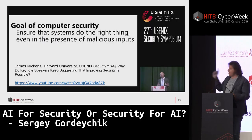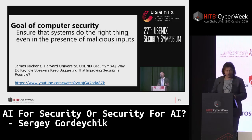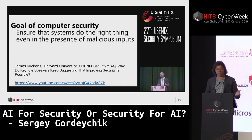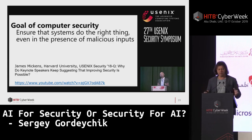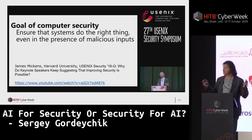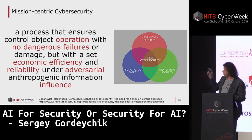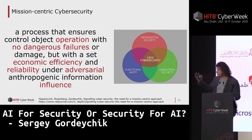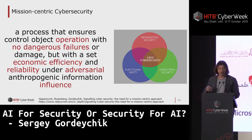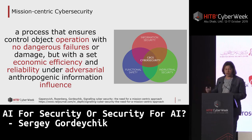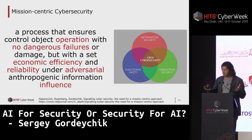I really like this definition of cybersecurity from James McKinsey, who gave a perfect keynote address at the USENIX Security Symposium. His definition is: what is the goal of cybersecurity? It is ensuring that systems do the right things, even in the presence of malicious inputs. I like it because in one of my research projects for industrial cybersecurity I gave a quite similar definition: cybersecurity is a process to ensure that control objects operate with no dangerous failures, with economic efficiency and regulability under adversarial anthropogenic information influence. The difference is that the input is from humans.